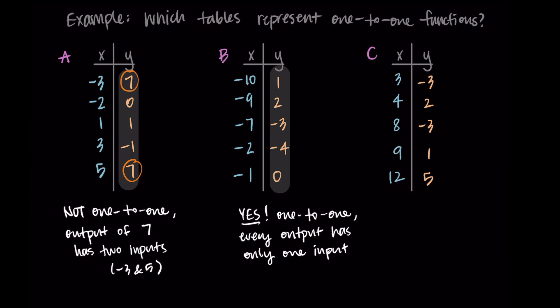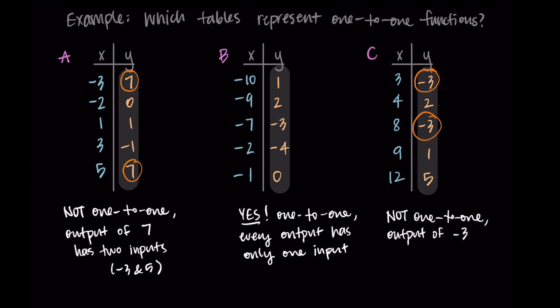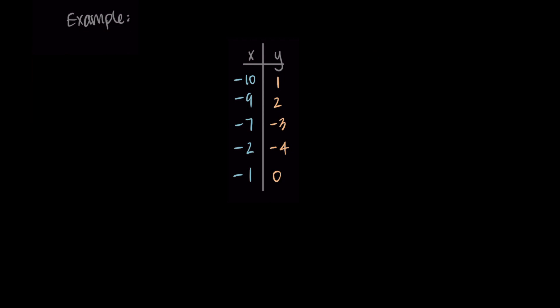Lastly let's look at table C. Every input shows up only once so it is a function. But when I check for one-to-one, I see the output of negative three shows up twice — the inputs of three and eight both correspond to the output of negative three. So even though C is a function, it is not one-to-one because that output of negative three has two inputs.